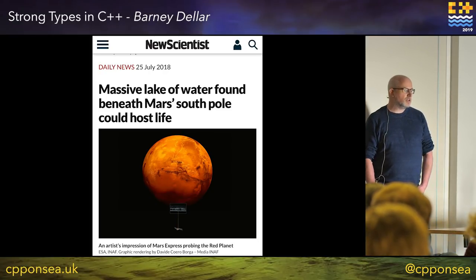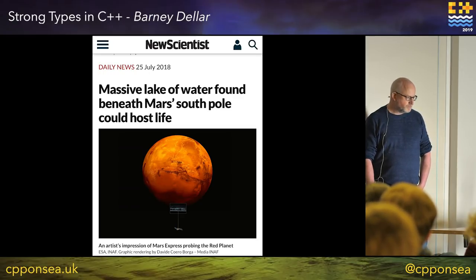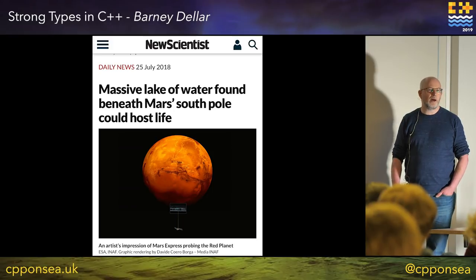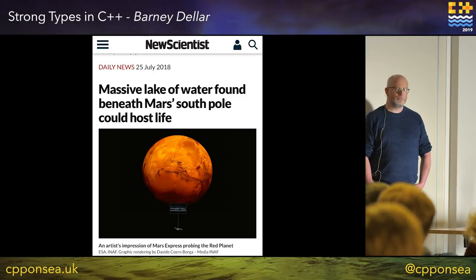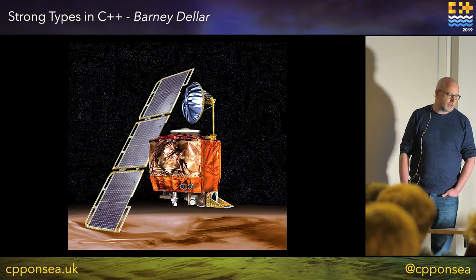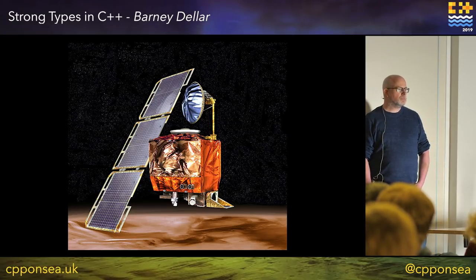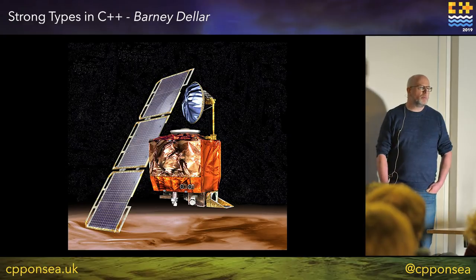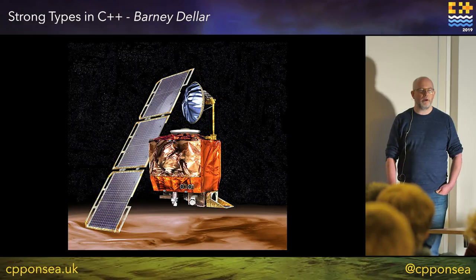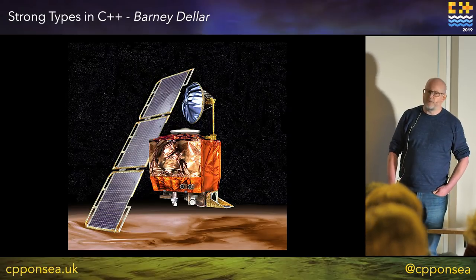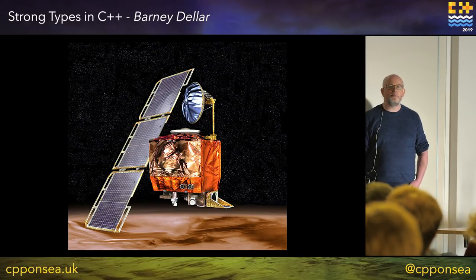Just recently, there was an announcement that an actual water lake had been detected under the southern Martian pole. There had been a plan a couple of decades ago to send a lander to the pole, supported by the Mars Climate Observer. What happened to that? It turns out there had been a plan — this is the Mars Climate Observer — and it crashed into the surface of Mars. And it turns out that it crashed because of a software error, which is interesting. The orbiter cost 328 million dollars, and it was destroyed by software.